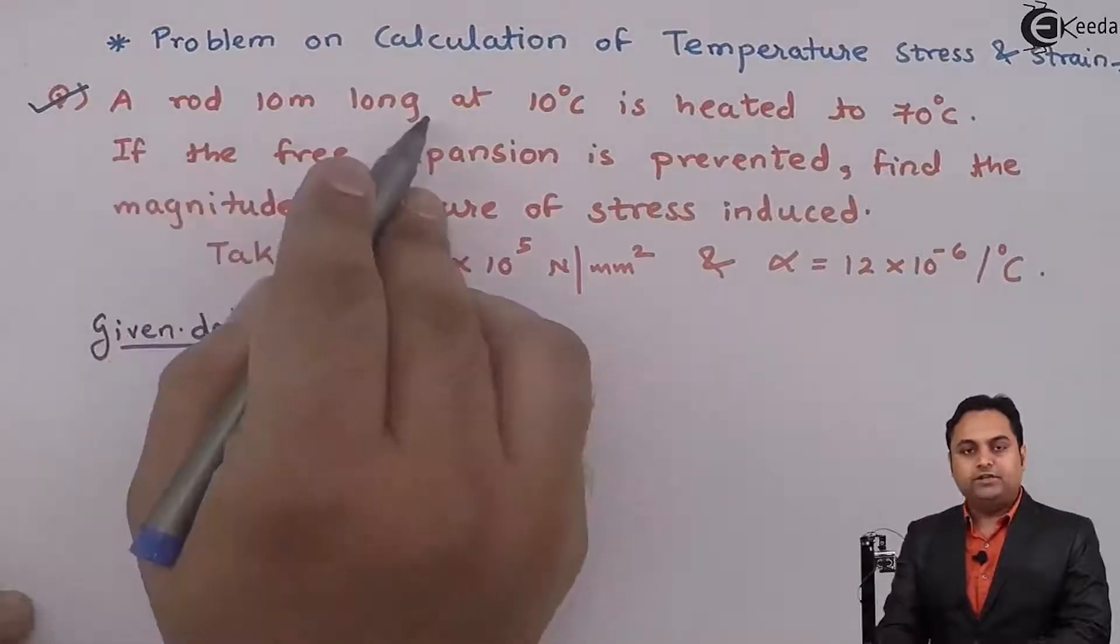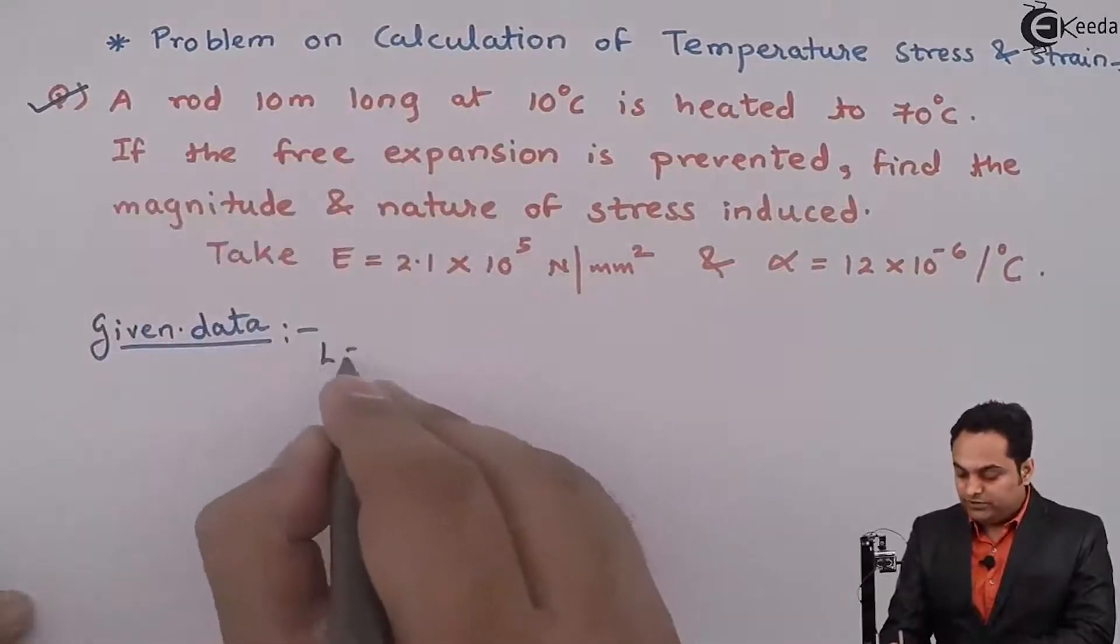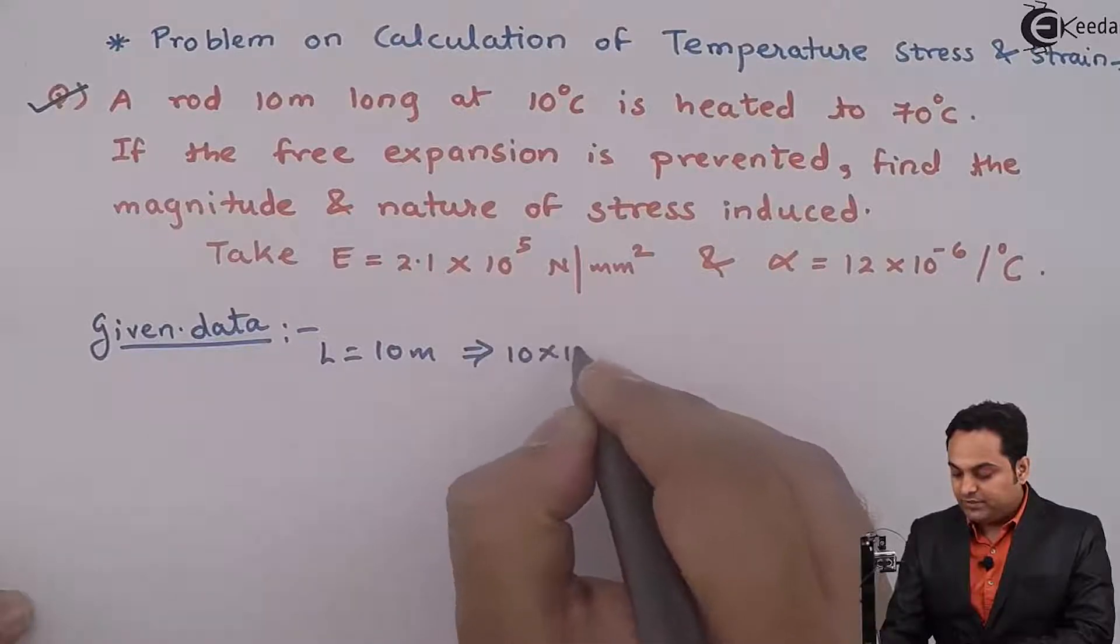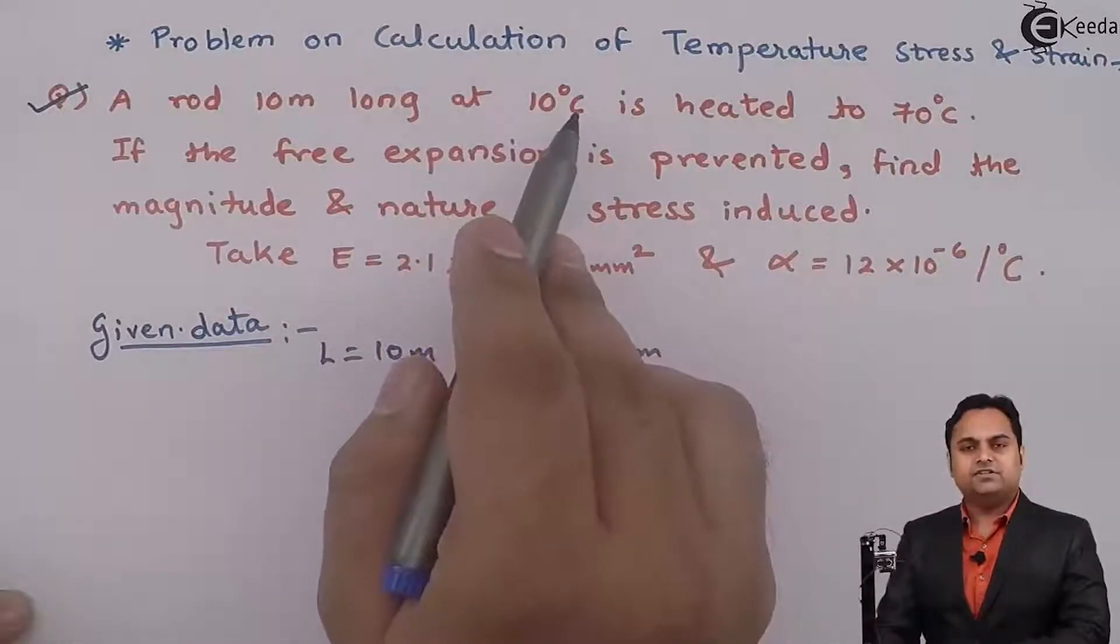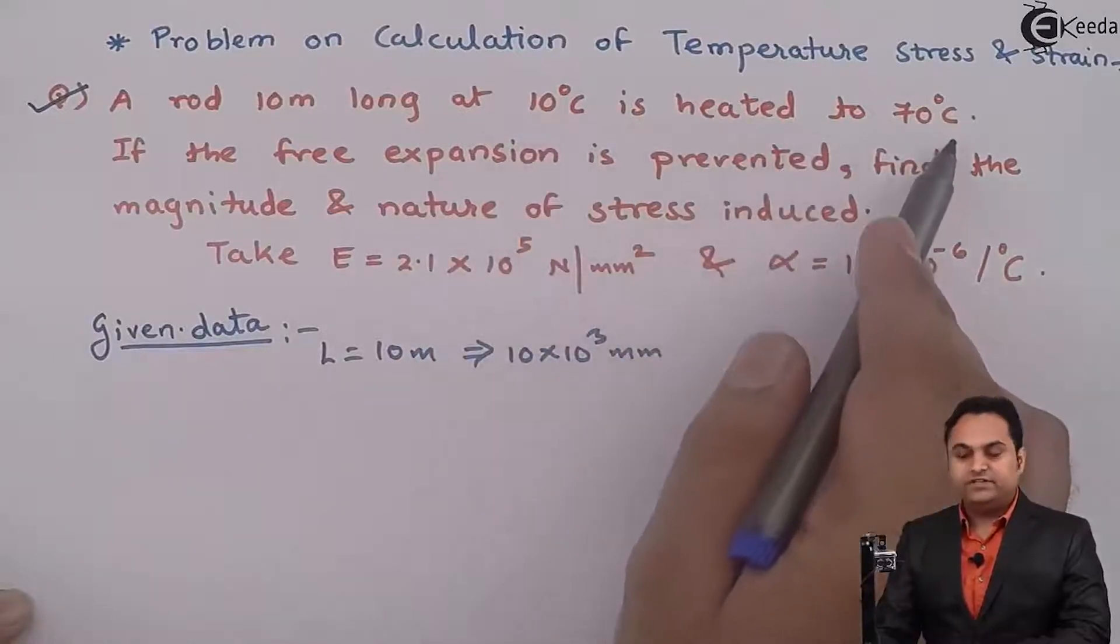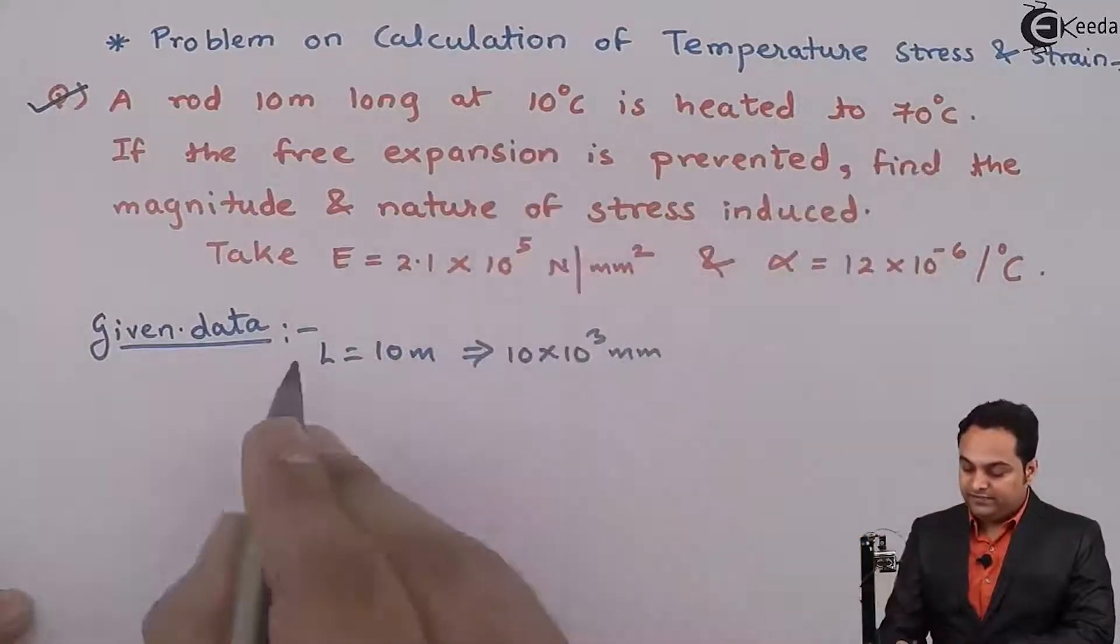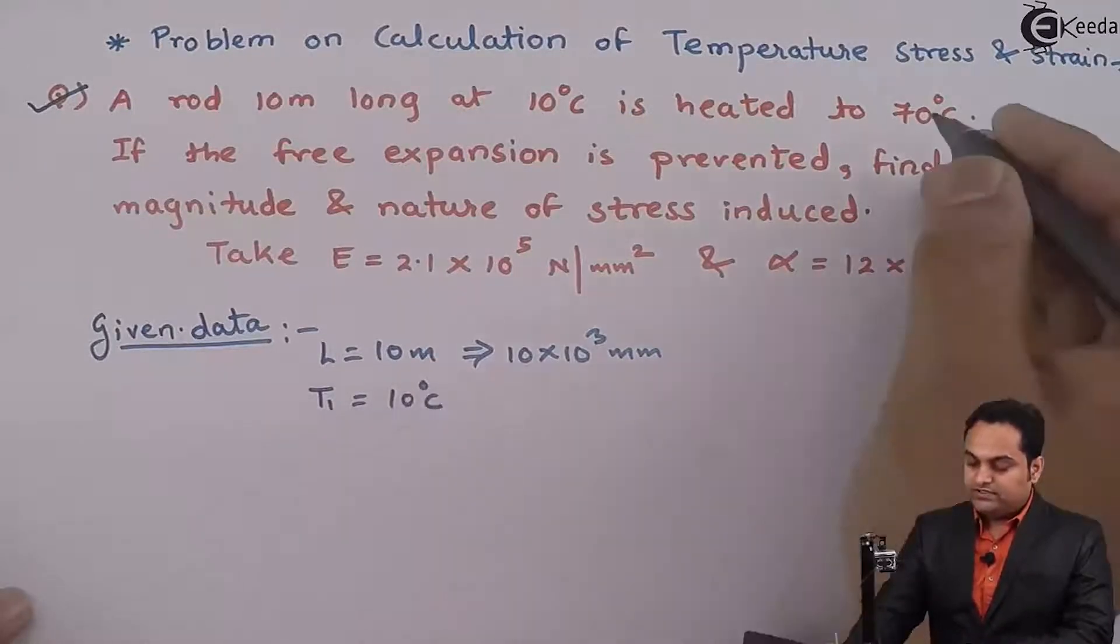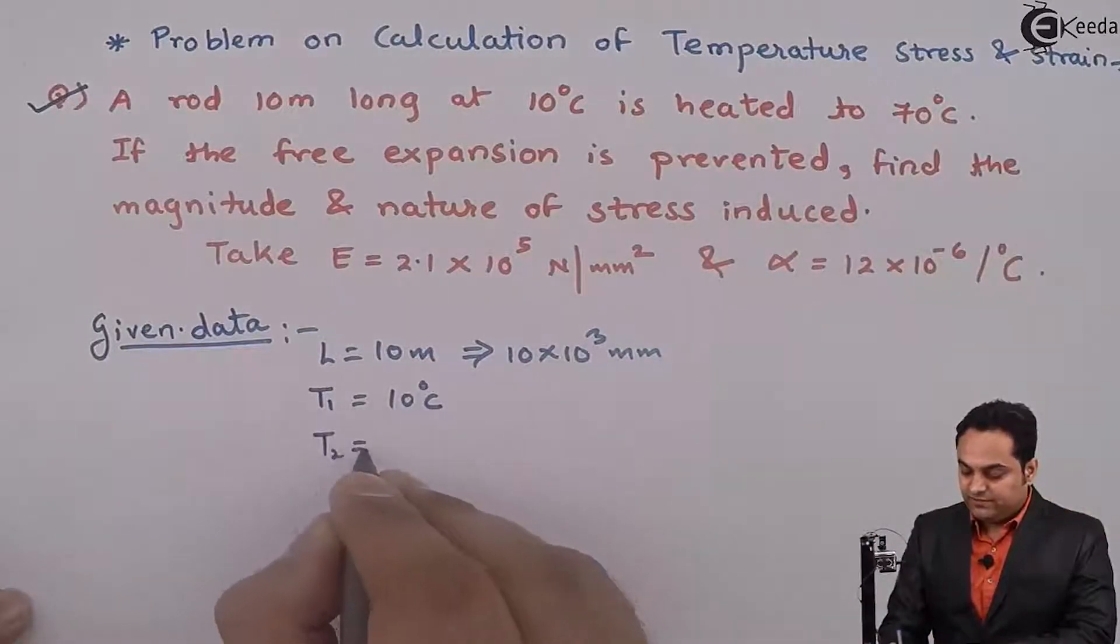A rod 10 meter long, length of the rod is given, 10 meter, so it is 10 × 10³ mm. At 10°C is heated to 70°C. So 10°C is the initial temperature T1 and 70°C is the final temperature.